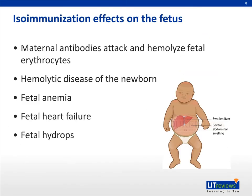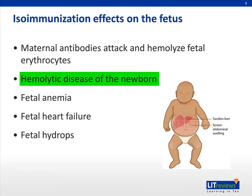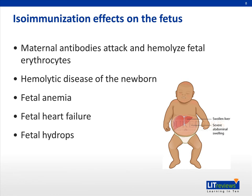When the mother has developed antibodies to the Rh antigen, it can adversely affect a future pregnancy of an Rh positive fetus. Specifically, when the condition is caused by the Rh D antigen, it is called Rh D hemolytic disease of the newborn. When the maternal IgG anti-D antibodies pass the placenta, they enter the fetal circulation and cause hemolysis.